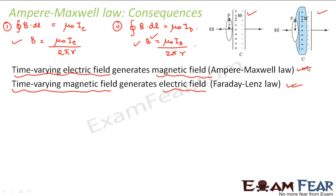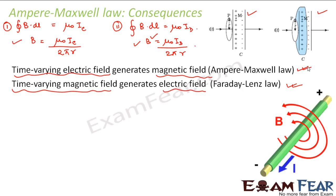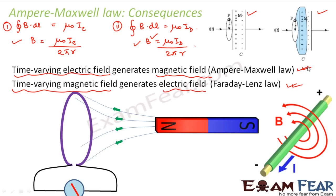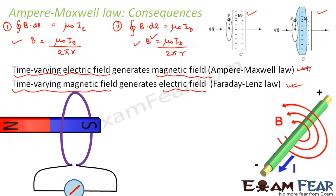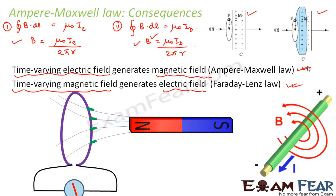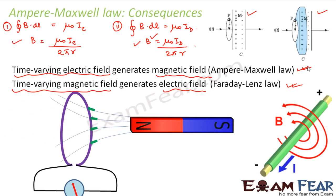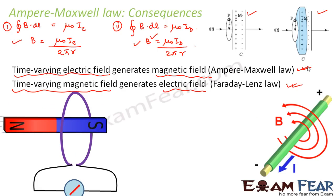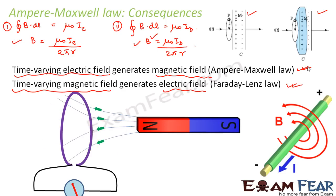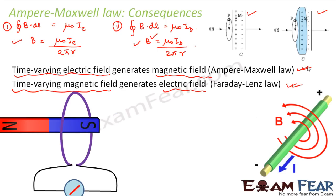Here is a diagrammatic representation of what was just discussed. One diagram represents Faraday-Lenz law — a time-varying magnetic field produces an electric field. The other shows that a time-varying electric field, represented by the current flowing through the conductor, generates a magnetic field.